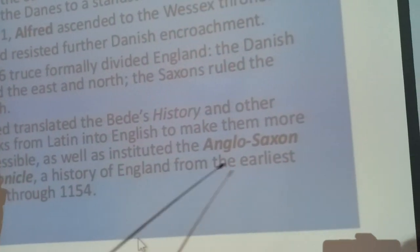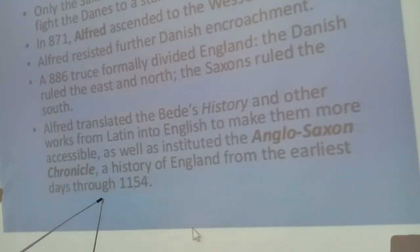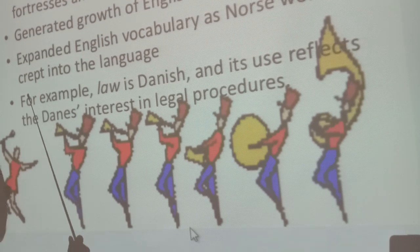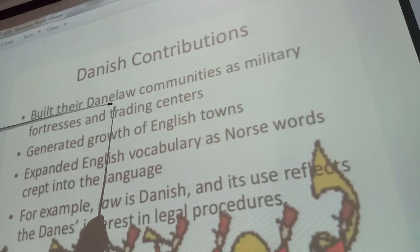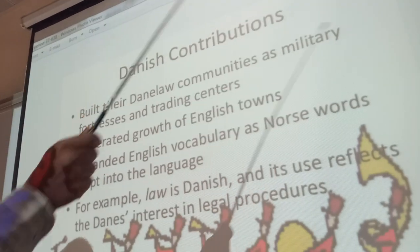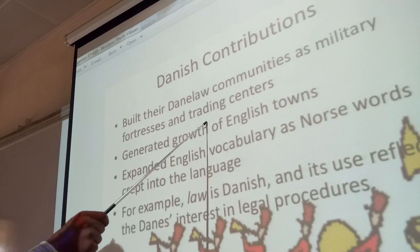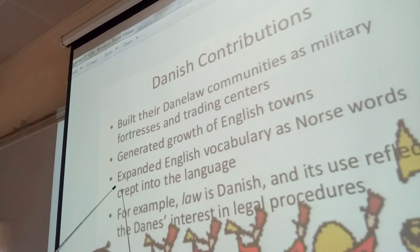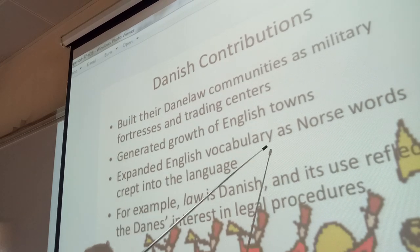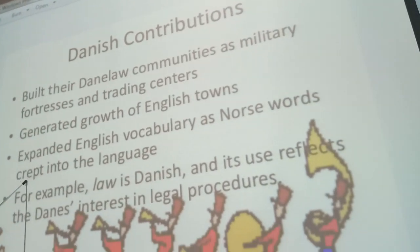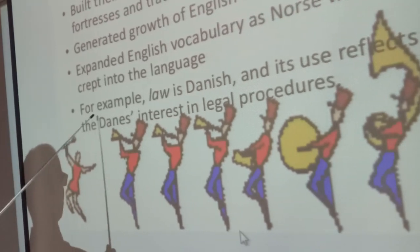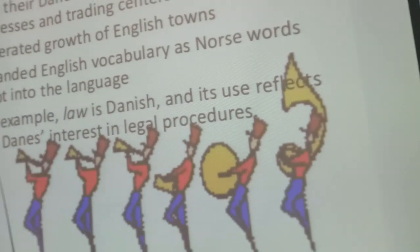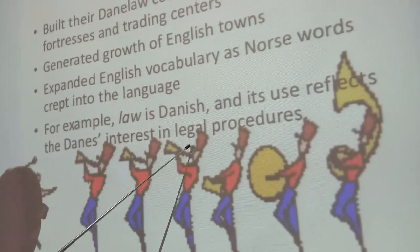Alfred resisted Danish encroachment. In 886 a treaty formally divided England: the Danes ruled the East and North, and the Saxons ruled the South. Alfred translated the British history and other works from Latin into English to make them more accessible, and also instituted the Anglo-Saxon Chronicle — a history of England from the earliest days.